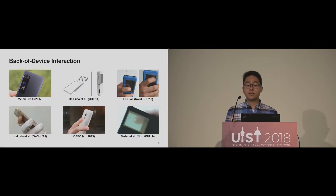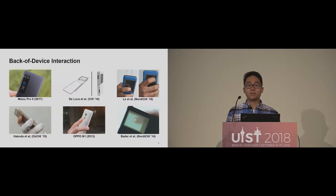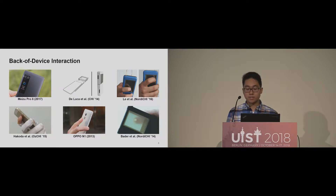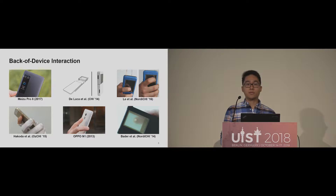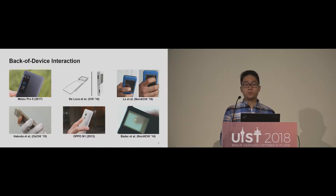Previous work extended the input space to the backside of the device to enable all other fingers on the backside to interact. This concept is called back-of-device interaction, and basically attaches a second device or an external touchpad to the backside of a smartphone. This works well for many use cases, but inputs of different fingers are still treated equally. More importantly, the full finger surface and the hand surface is touching the backside during interaction.